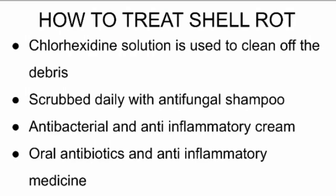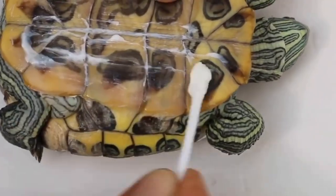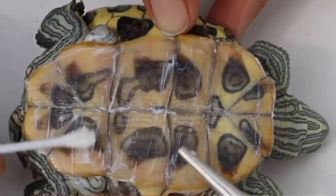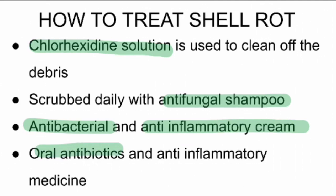So how do you treat shell rot? Chlorhexidine solution is used to clean off the debris first, and then the turtle is scrubbed daily with antifungal shampoo. After shampooing the turtle, antibacterial and anti-inflammatory cream are rubbed onto the shell. Oral antibiotics and anti-inflammatory medicine are also prescribed.